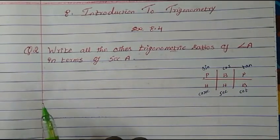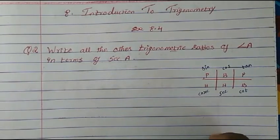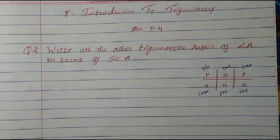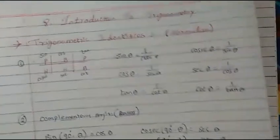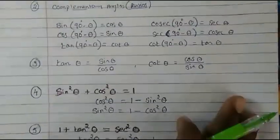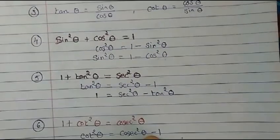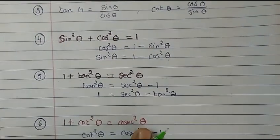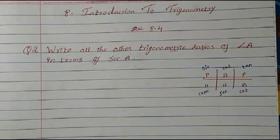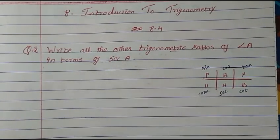Same way we did question one, we can do this. There are two ways: one is to complete the triangle and just write the values; another is using trigonometric identities. You have to learn the identities by heart — the more you practice, the better.